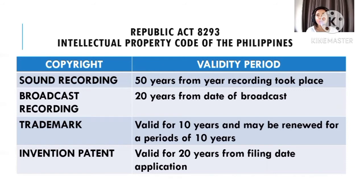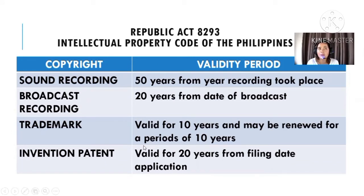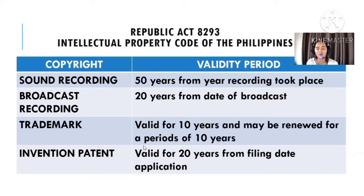If a writer has written works and has already passed away, the copyright on those works becomes public domain — meaning everyone can use them. If the creator has been dead for a very long time — say, 300 years — all their works are owned by the public domain. In the public domain, you just need to credit the author. However, for broadcasting and trademark, there are rights involved, so if someone holds those rights and you use their work without permission, you need to pay them.